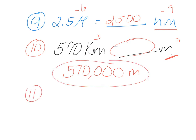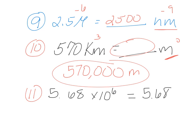Number eleven: the Valencia Reclamation Plant reclaims 5.68 million liters of wastewater each day. How many megaliters is this? A million is 10 to the 6th — but that's also a mega. A mega is also a million. So 5.68 million liters is really 5.68 megaliters. This problem is designed to make you remember that mega means million.